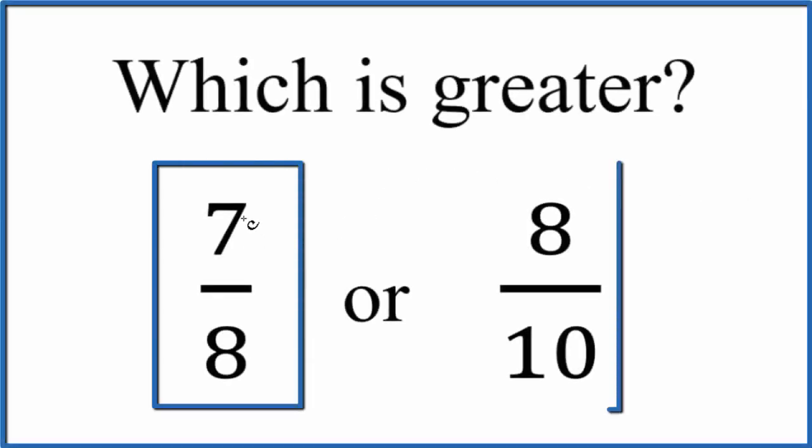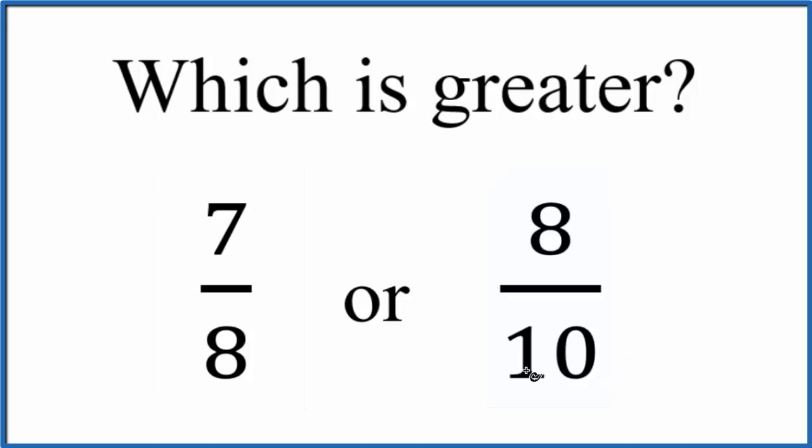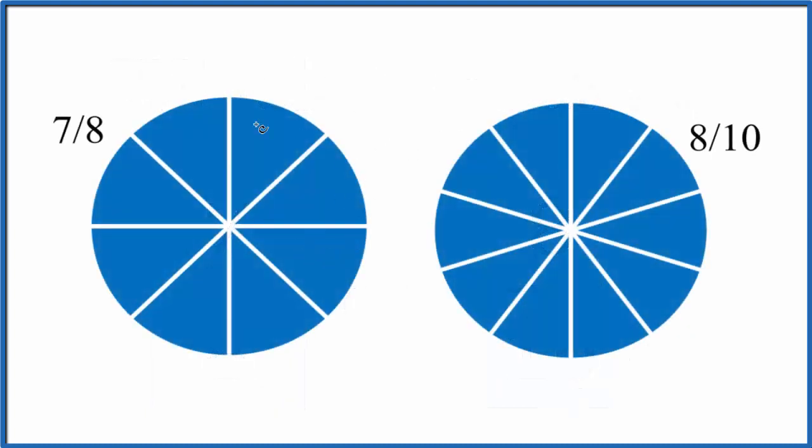Which number is larger, 7/8 or 8/10? We have these two circles here. This one's divided into eight separate pieces. Let's label them, so each piece is 1/8. Over here we've divided into 10 separate pieces, and each piece is 1/10.